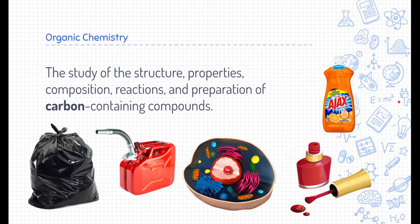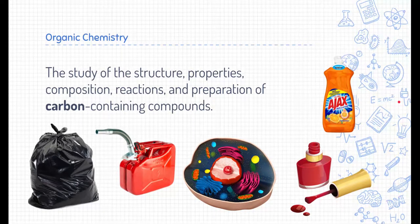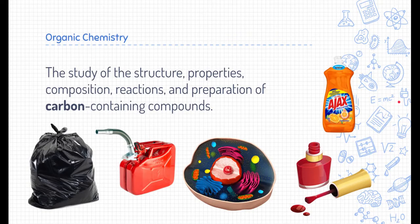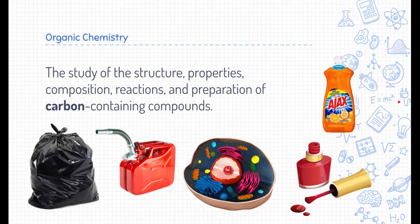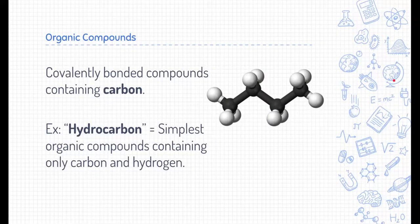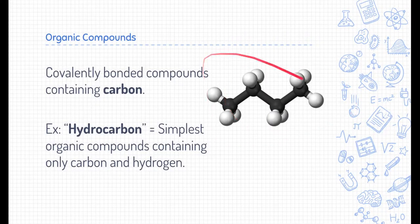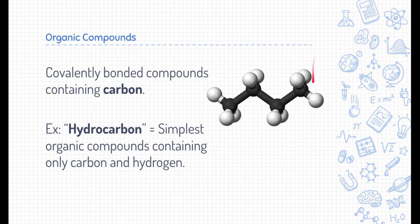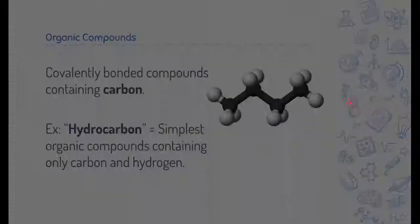The study of plastics or fuels are examples of organic chemistry because they're structures, properties, compositions, reactions, and how to prepare carbon-containing compounds. This is an example of an organic compound. You probably remember covalent bonds. Organic compounds are covalently bonded carbon atoms. This is a hydrocarbon. It's the simplest form of an organic compound that contains only carbon and hydrogen.